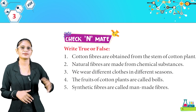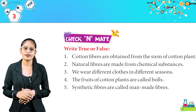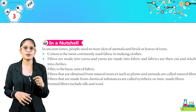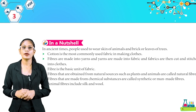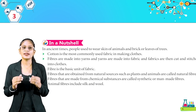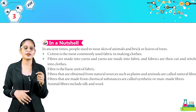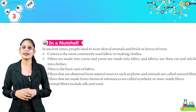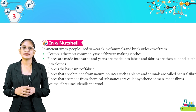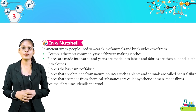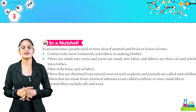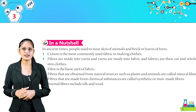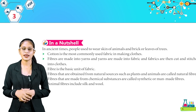Here is the check and mate — what we learned in this chapter in a nutshell. In ancient times, people used to wear skin of animals and bark or leaves of trees. Cotton is the most commonly used fabric in making clothes. Fibers are made into yarns, yarns are made into fabric, and fabrics are cut and stitched into clothes. Fiber is the basic unit of fabric. Fibers obtained from natural sources such as plants and animals are called natural fibers. Fibers made from chemical substances are called synthetic or man-made fibers. Animal fibers include silk and wool.